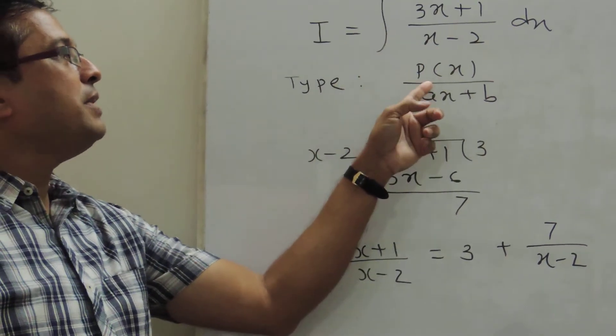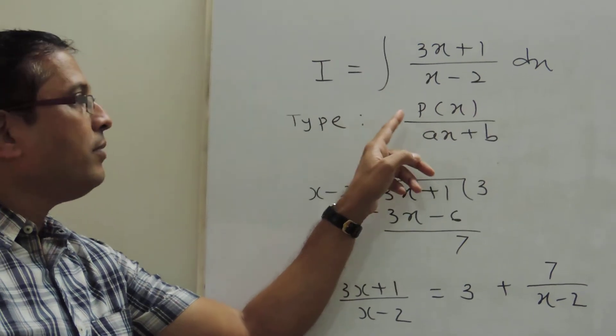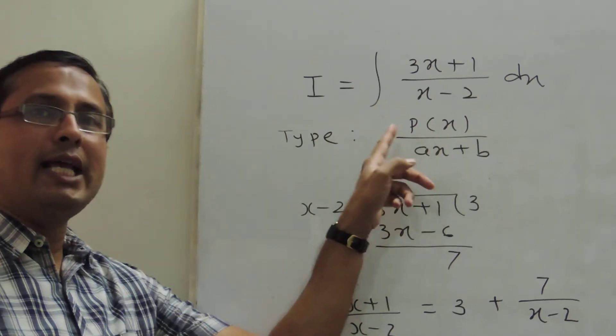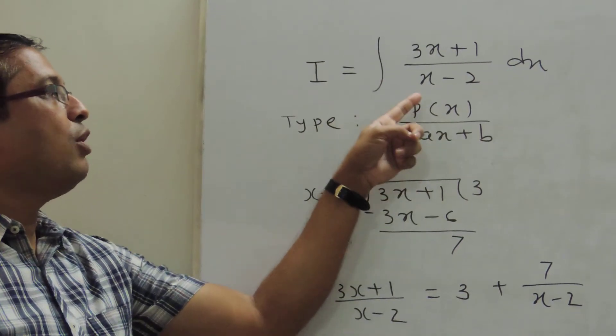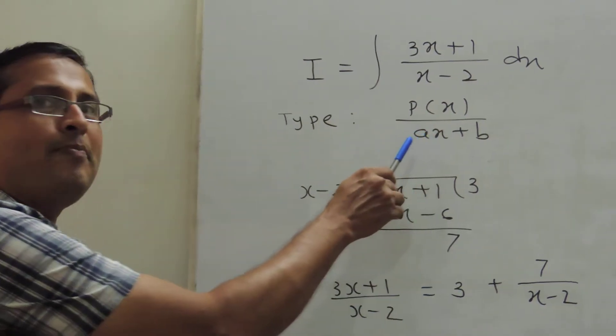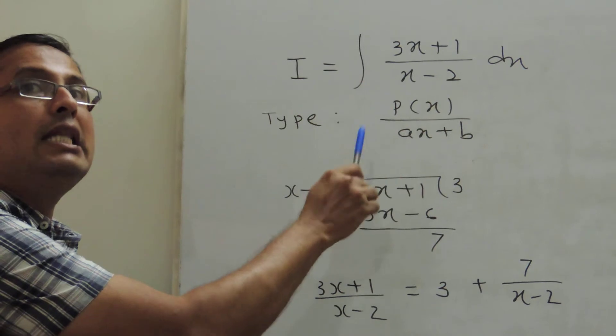Now this type is very important. What is the type of this integral? P of x upon ax plus b. That is, numerator is a polynomial of x and denominator is a linear function.